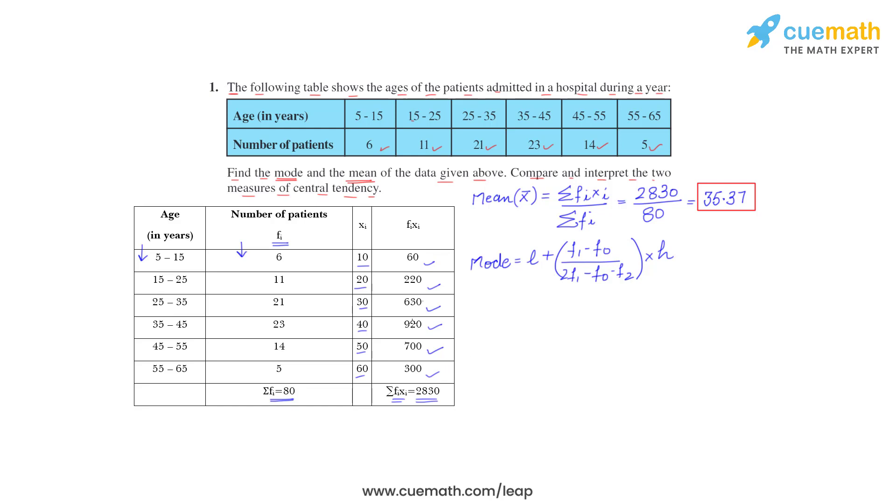So I will write down all these values. First of all, from the table it can be observed that maximum class frequency is 23. Maximum class frequency as you can see it is 23, so this becomes our modal class, which is 35 to 45. So modal class is 35 to 45. It means class size H is 45 minus 35, that is 10. L means lower limit of modal class, lower limit of modal class is 35. So L is equal to 35.